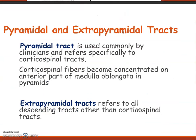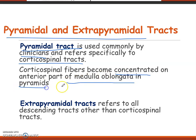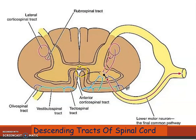The terms pyramidal and extrapyramidal tracts are often used by clinicians. Pyramidal tracts refer specifically to the corticospinal tracts, which become concentrated in the anterior part of the medulla oblongata in structures called pyramids. Extrapyramidal tracts refer to all descending tracts other than the corticospinal tracts — any tract that does not pass through the pyramids is extrapyramidal.